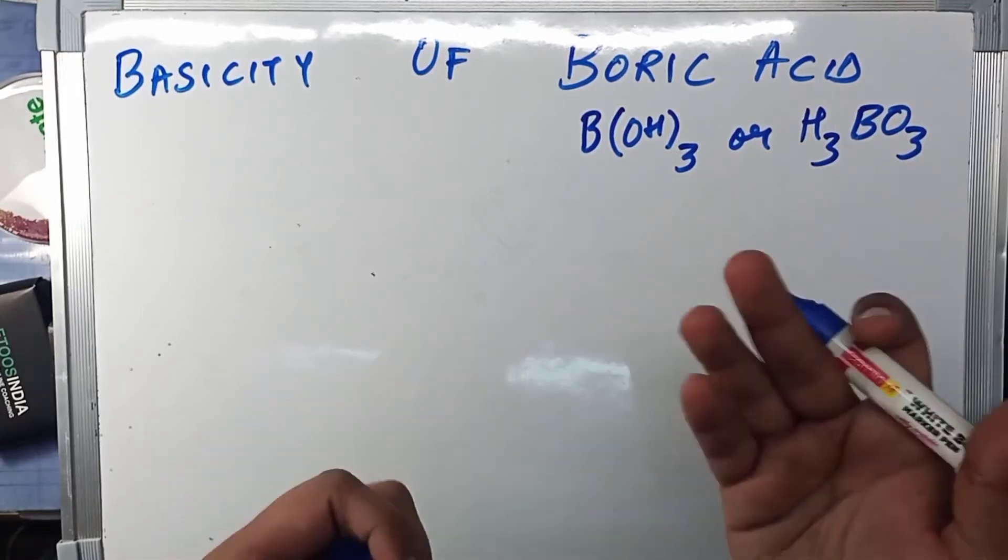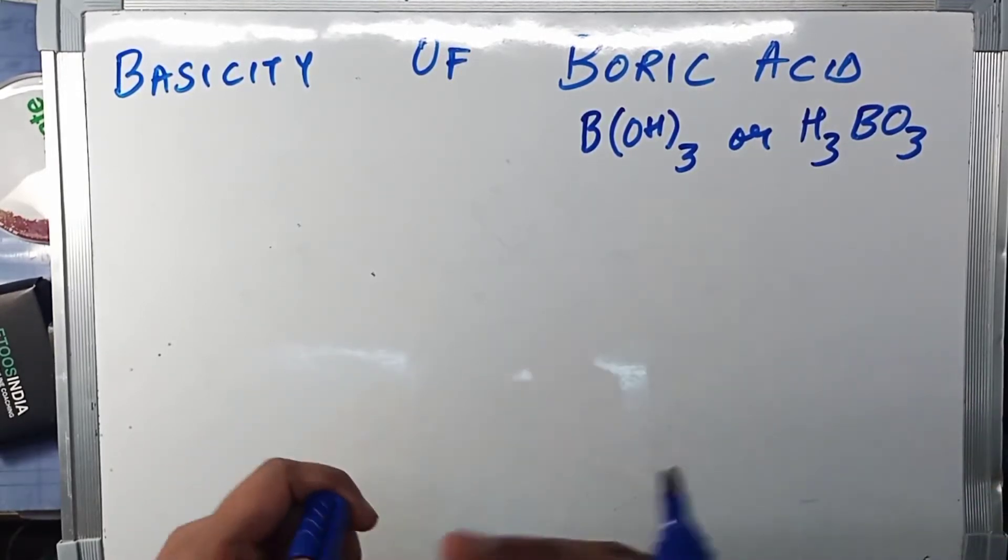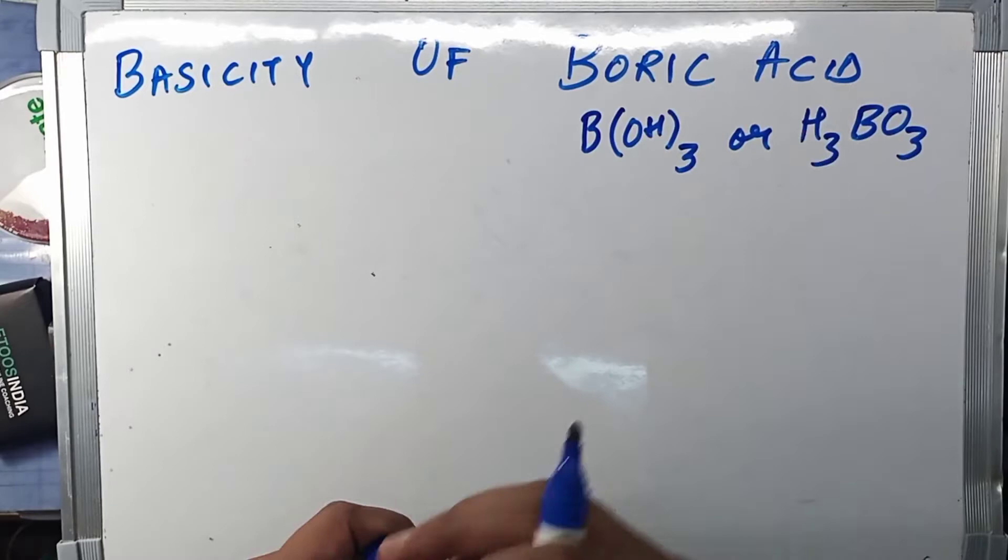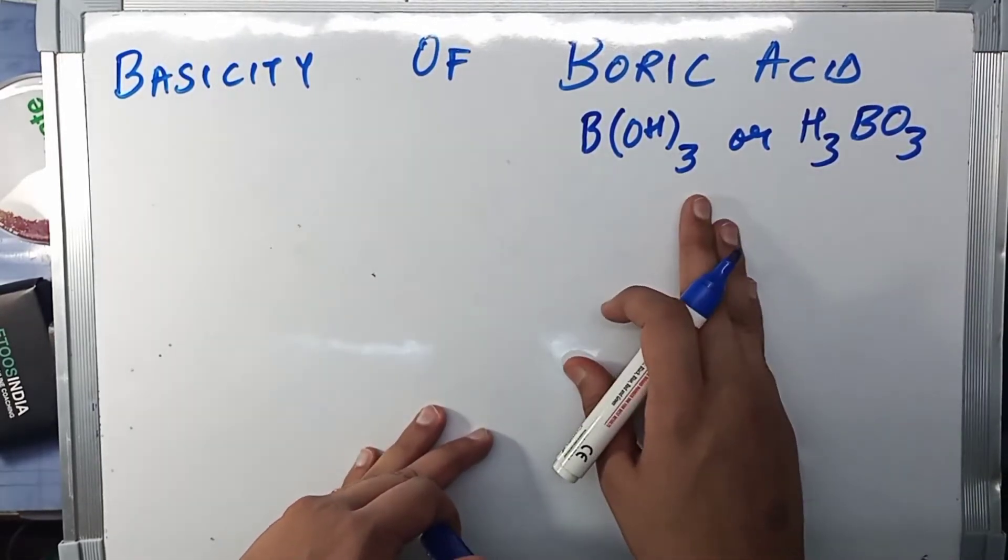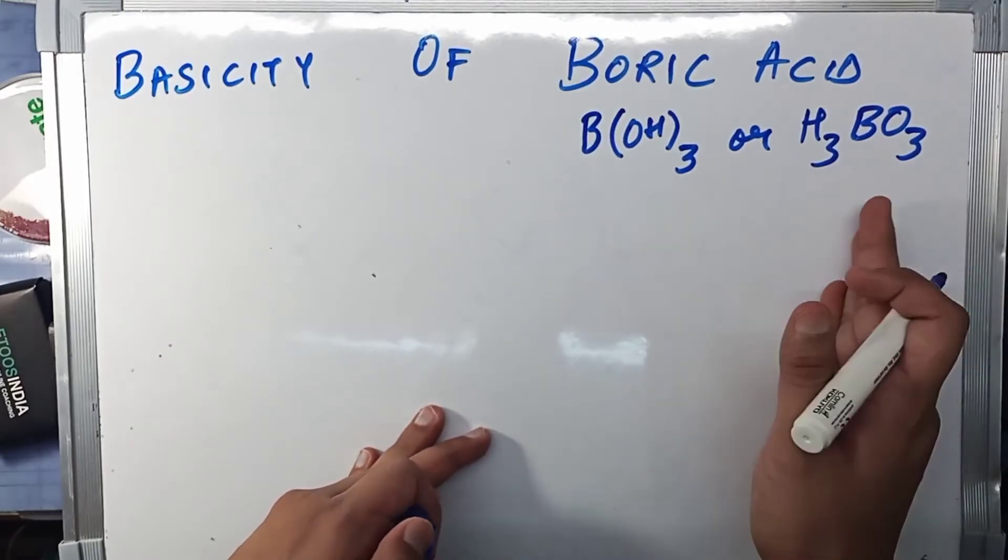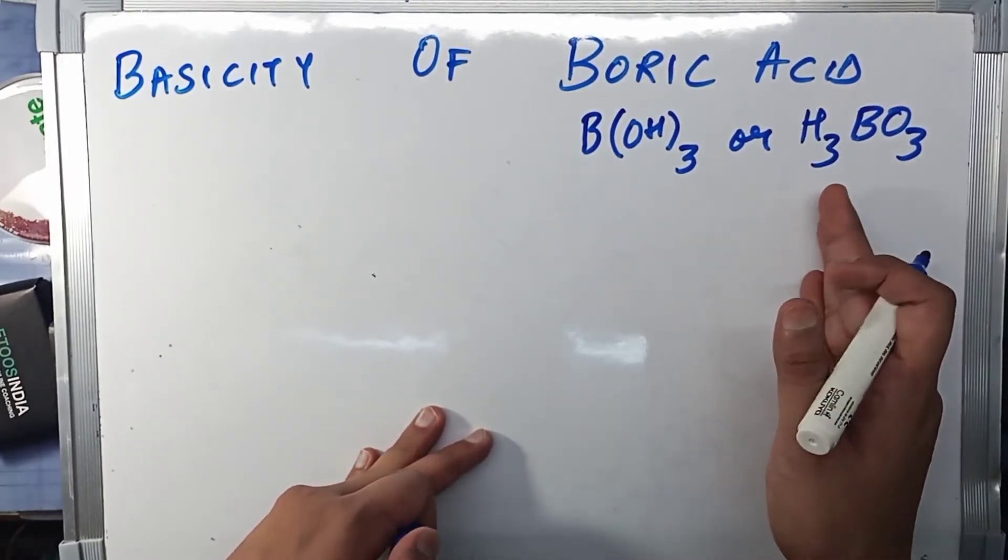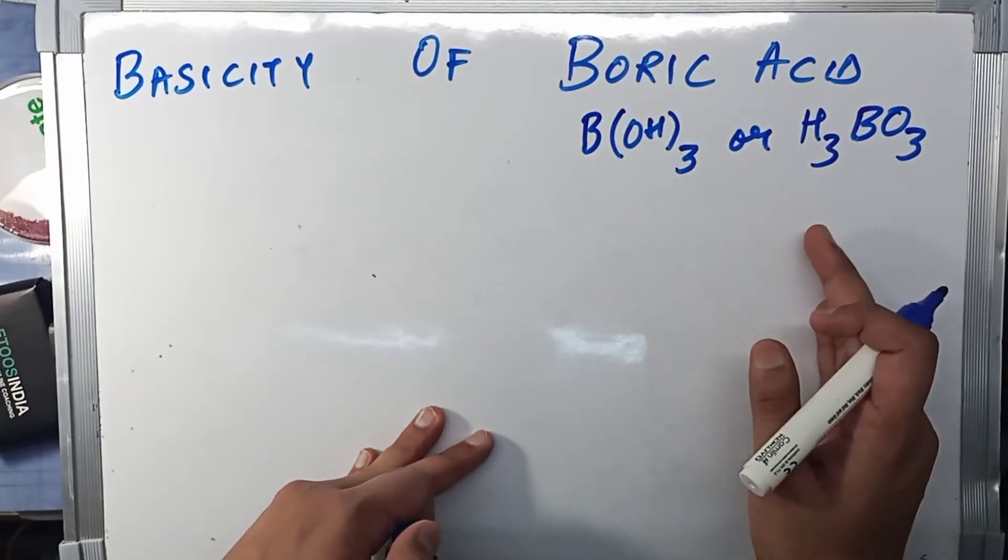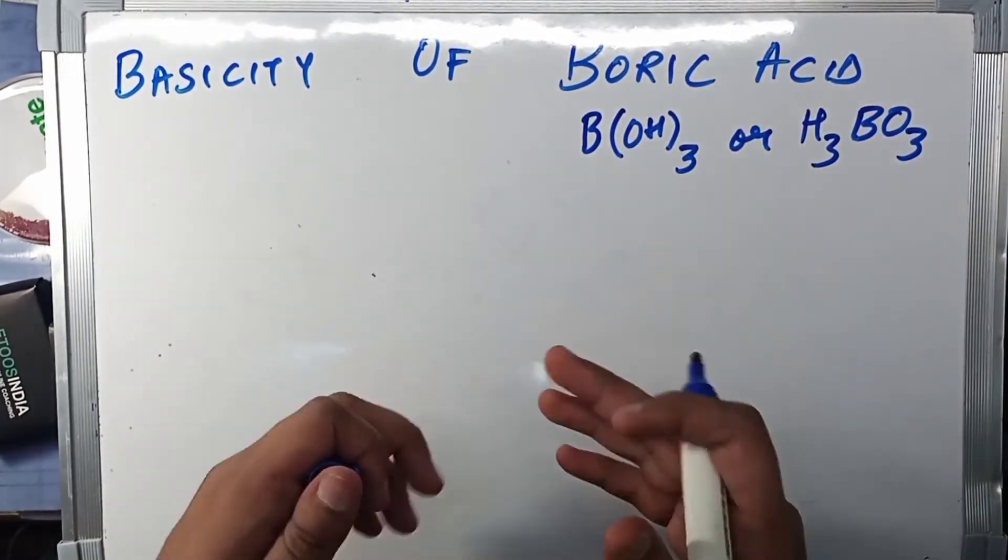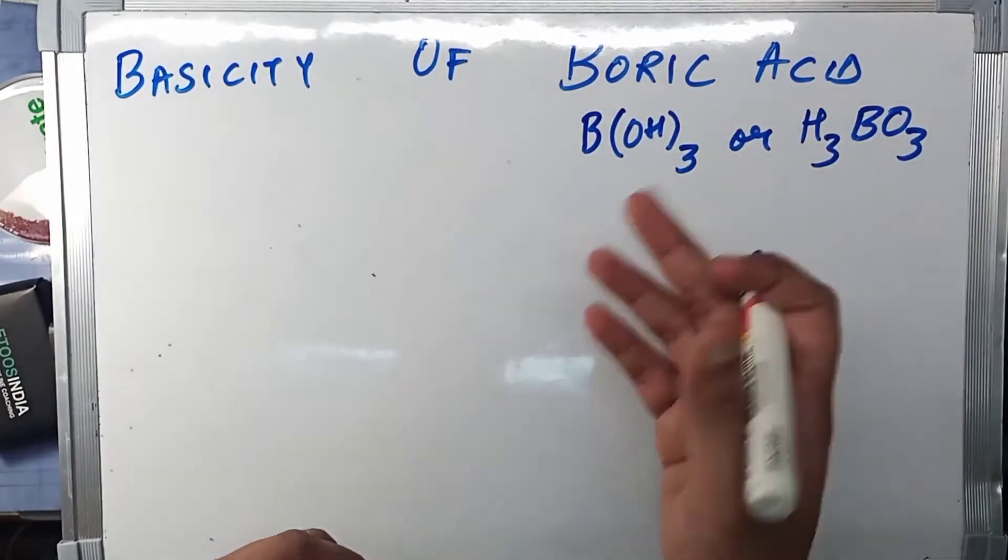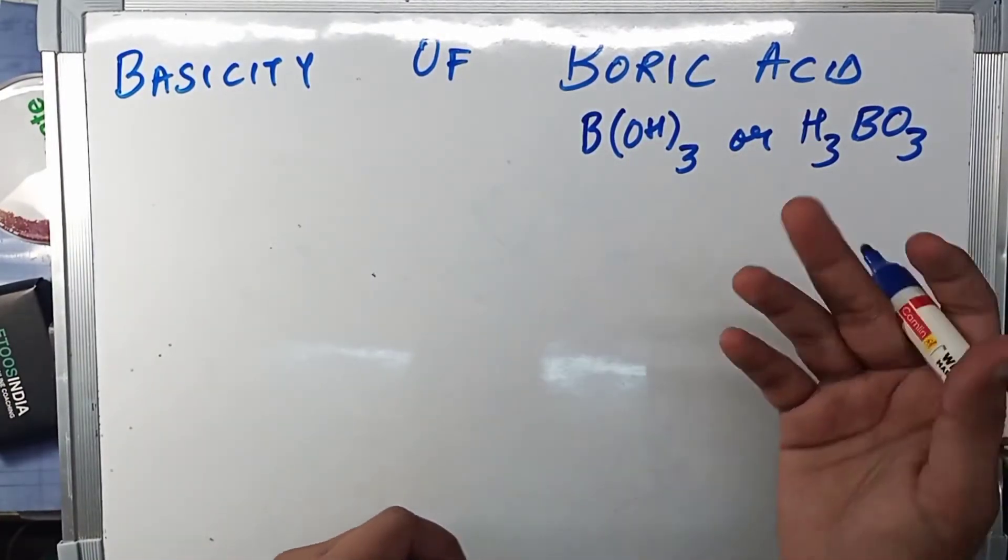Now what basicity means in the case of an acid is the number of hydrogen ions, H⁺ ions, an acid can give. Now this one is a particular exception because it does not release H⁺ ions from itself, but it releases H⁺ ions from the water.